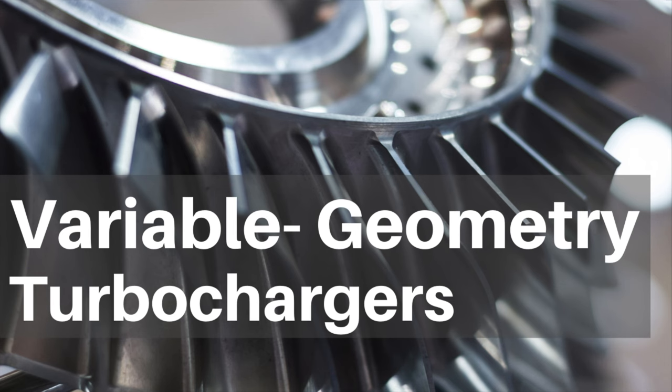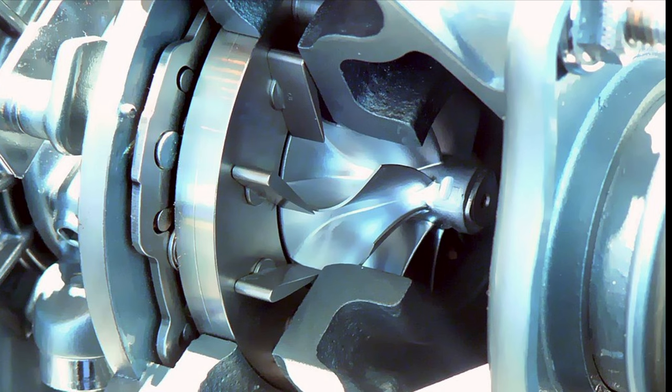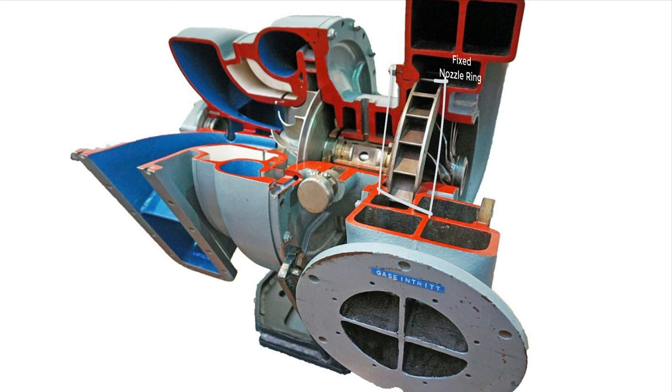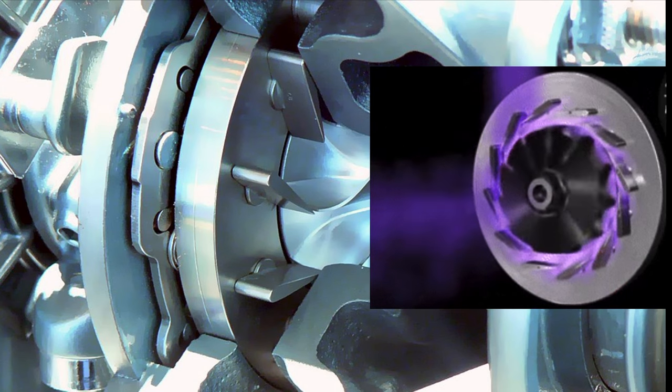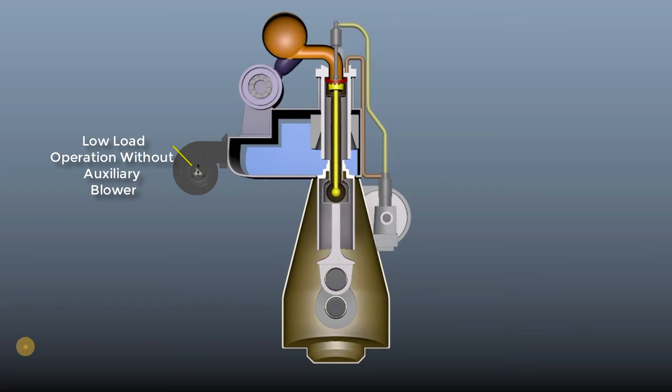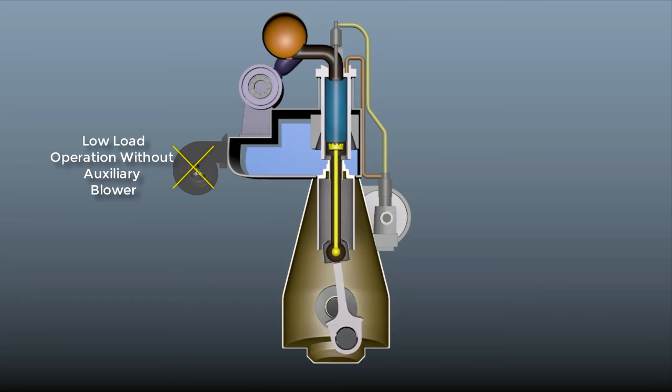Variable geometry turbocharger. A VGT or VTA is a turbocharger wherein movable vanes are replaced for conventional fixed vanes which can change angles to control the exhaust flow on the turbine blades. This helps the engine control to balance the volume of air with the fuel along with the engine load range.